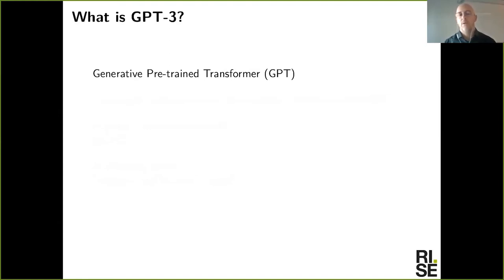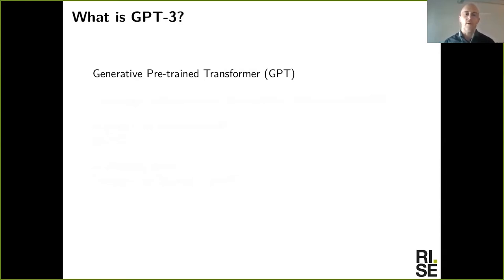It's a pre-trained model, which means it has already learned linguistic knowledge that we can then apply to solve various types of linguistic problems. We'll look at some examples of that in this webinar. It's also a transformer model — Ariel will talk more about what that means — and the number three indicates that this is the third generation of this model.